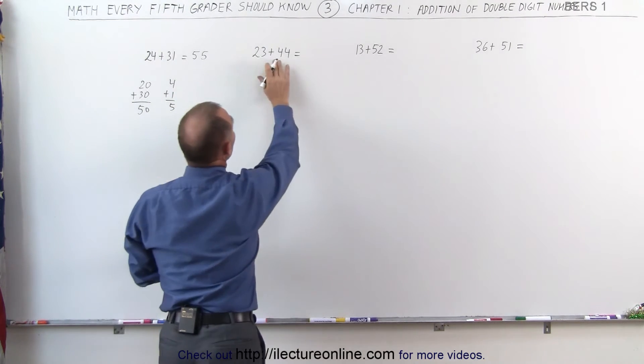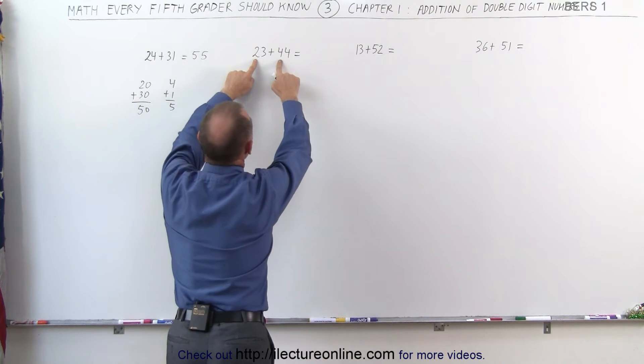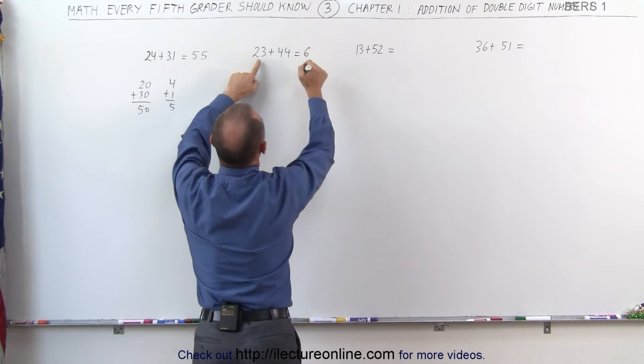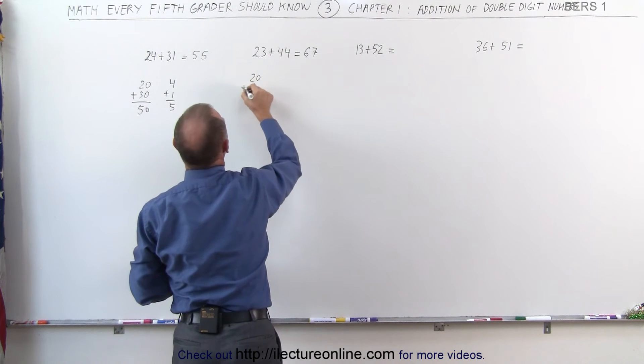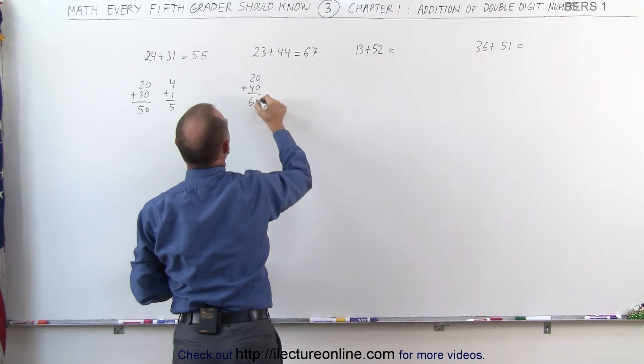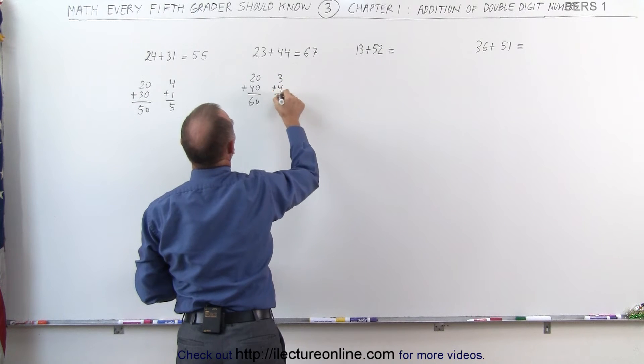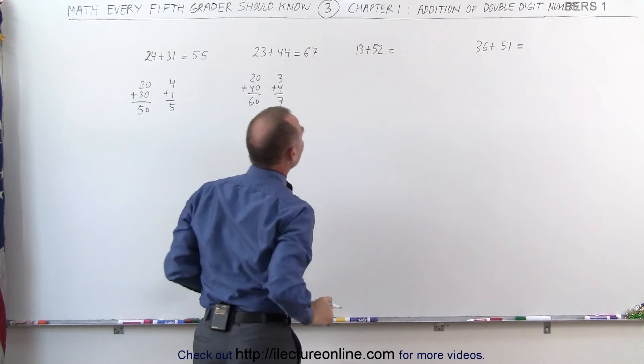Same over here, 23 plus 44, add the two first numbers together, 2 plus 4, that is 6. 3 plus 4, that is 7. In other words, we have 20 plus 40, which is 60. And 3 plus 4, which is 7. 67 altogether.